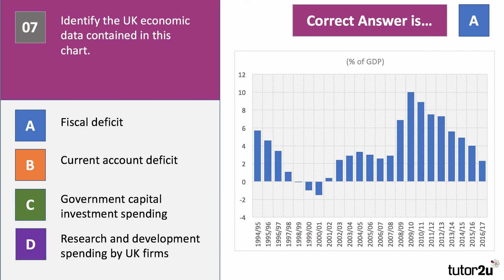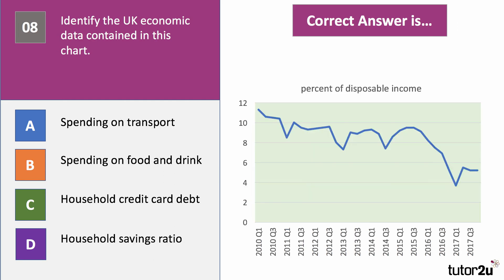Three more charts to go. Chart eight: identify the economic data contained in this chart, measured as a percentage of disposable income on a quarterly basis. Is it spending on transport, spending on food and drink, household credit card debt, or the household savings ratio? Press pause — what do you think for chart eight?